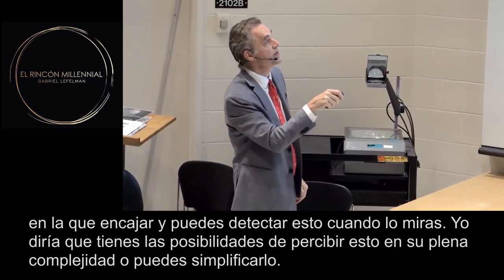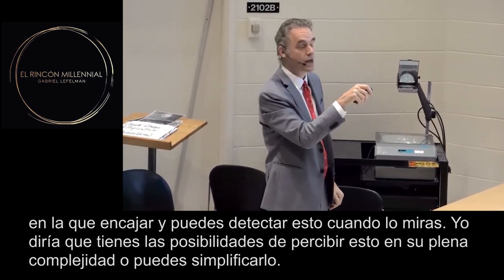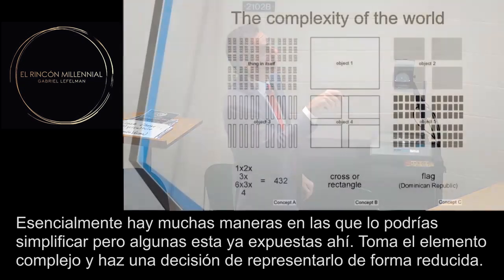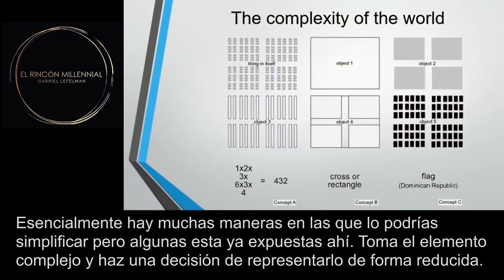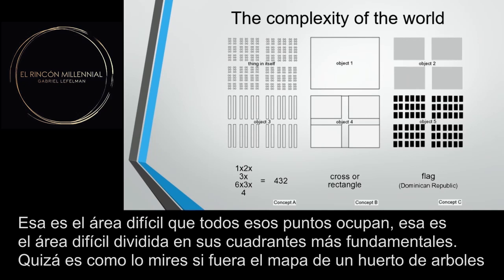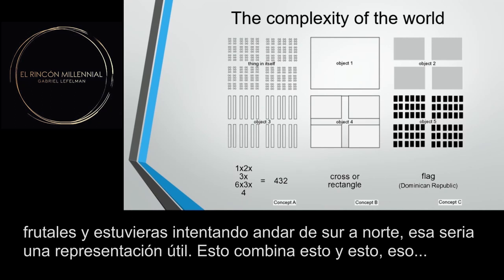You have the options of perceiving this in its full complexity, or you can simplify it. There are lots of ways you can simplify it, but some of them are laid out there. So you take the complex thing and make a low-resolution representation of it — that's the rough area that all those dots occupy, broken down to its four most fundamental quadrants. That might be how you'd look at it if this was a map of an orchard and you were trying to walk from south to north.